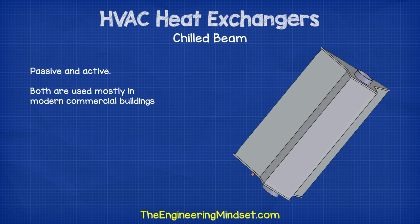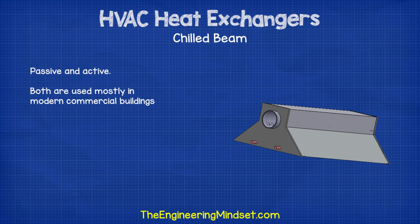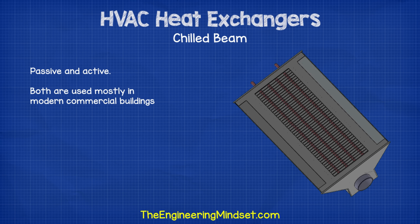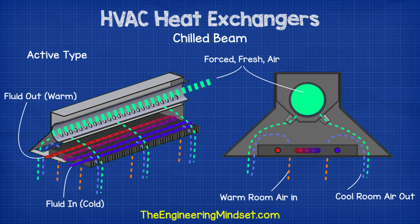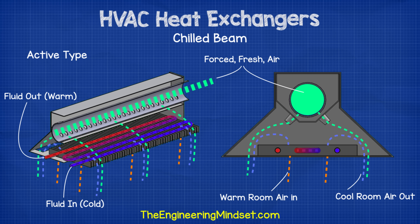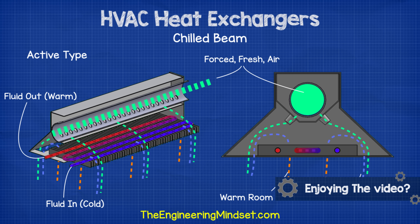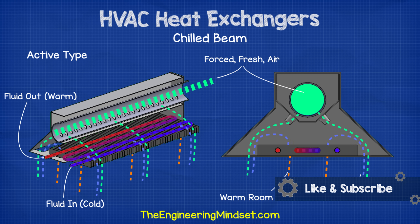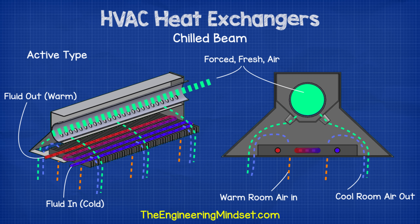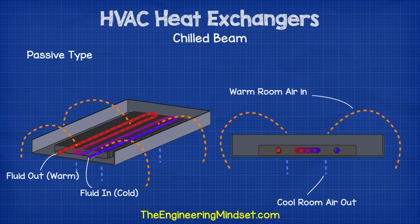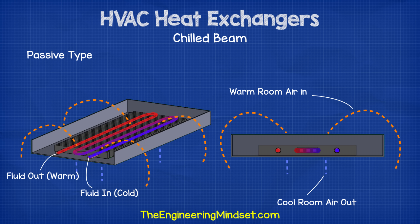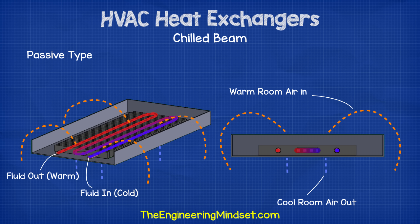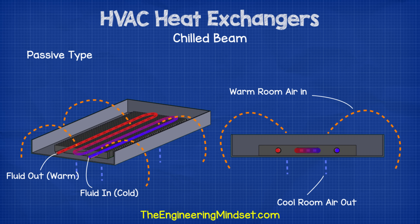There are two types of chilled beam: passive and active, both used mostly in commercial buildings. Active chilled beams pass a cool liquid, typically water, through a thin tube heat exchanger; air is ducted into the chilled beam and exits through a specially positioned nozzle, moving over the thin tube and blowing cold air into the room using forced convection. Passive chilled beams also use thin tube heat exchangers but without a ducted air supply — they create a natural convection current by cooling down warm air at ceiling level, which then sinks and is replaced by warmer air where the cycle repeats.